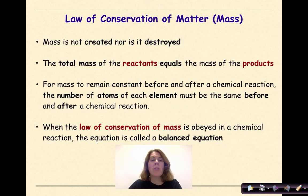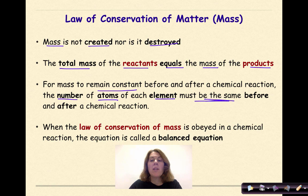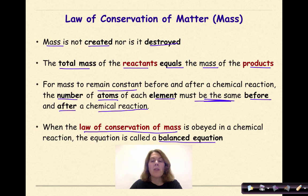The law of conservation of matter states: mass is not created nor is it destroyed. The total mass of the reactants equals the mass of the products. For mass to remain constant before and after a chemical reaction, the number of atoms of each element must be the same before and after the reaction. When this law is obeyed, the reaction is called a balanced equation — and that is what we are looking to do today.